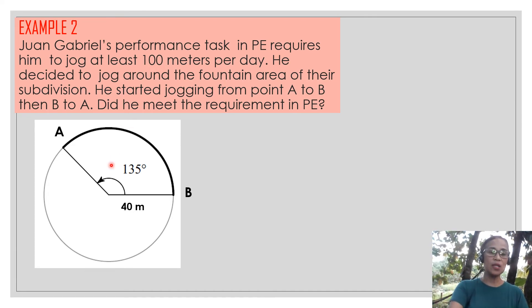Remember, the requirement is 100 meters. So you cannot go below 100 meters. You can go over 100 meters. Now, given the central angle at the fountain is 135 degrees, and the radius is 40 meters. So we are going to solve now for what? Is it the circumference or just the arc length? The arc length.